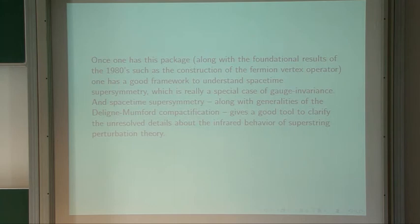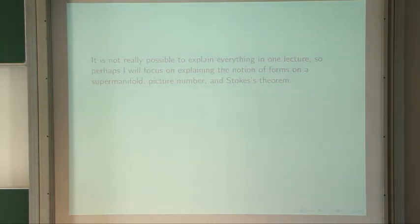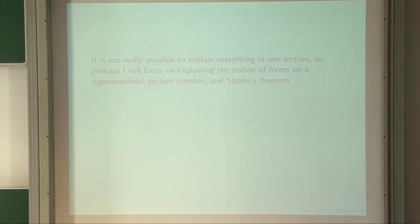This package — including space-time supersymmetry and the nature of the Deligne-Mumford compactification — gives a good tool to clarify the details about superstring perturbation theory in the infrared that were unclear in the 80s. It's not possible to explain everything in one lecture, so I'm going to focus on explaining a piece of what we should be aiming for: namely what we mean by forms on a supermanifold, picture number, and Stokes' theorem.